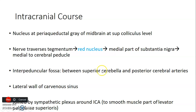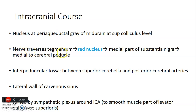For the intracranial course of the oculomotor nerve: the nucleus is located in the periaqueductal gray of the midbrain — the gray matter surrounding the aqueduct of Sylvius — at the level of the superior colliculi. The nerve traverses the tegmentum, pierces the red nucleus, passes medial to the substantia nigra, then medial to the cerebral peduncle, and sits in the interpeduncular fossa between the superior cerebellar and posterior cerebral arteries.